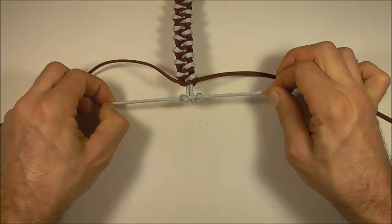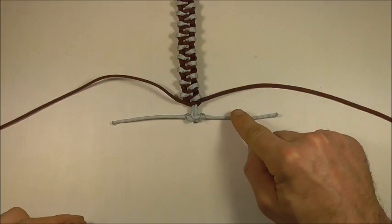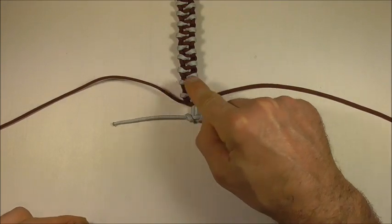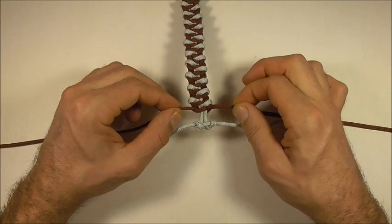And then tighten it up by pulling directly outwards. And then we just need to cut off all the excess pieces and then singe them with a lighter.